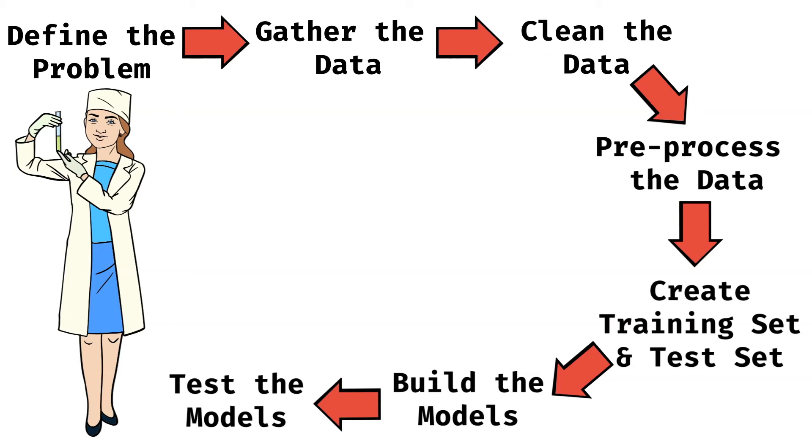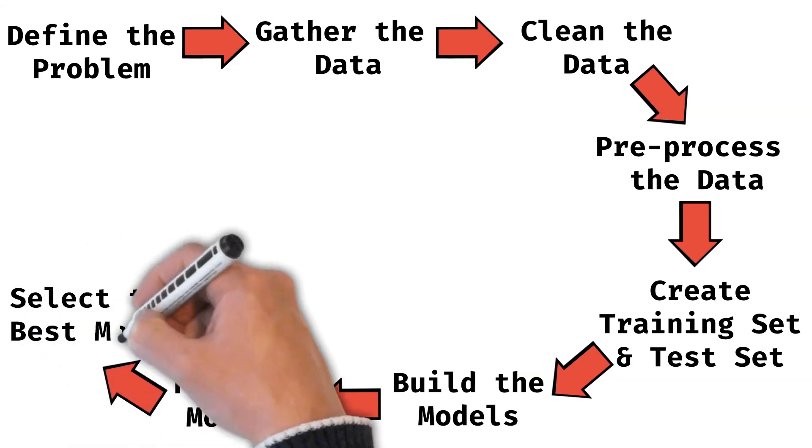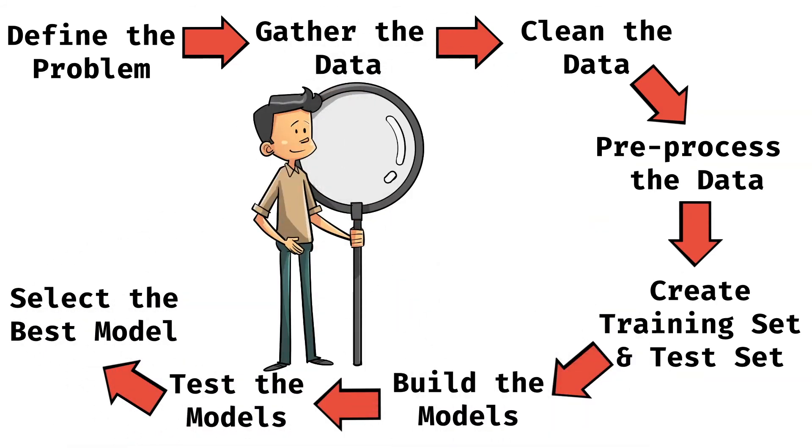Once we have tested the model, we should gather the statistics from the models based on the parameters what we would have defined. The parameters need to be appropriate for the problem that we are solving. Now based on these parameters, we should make the selection of the best model which suits our requirement the best.